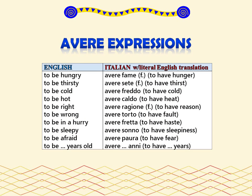However, there is a group of statements that expresses certain physical, emotional, and mental states for which English will continue to use the verb 'to be' plus an adjective, while Italian will use the verb avere plus a noun. Here is a list of some common avere expressions.